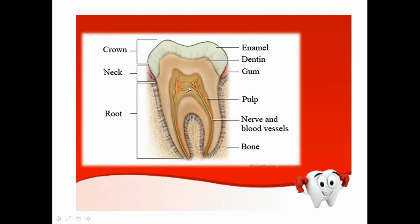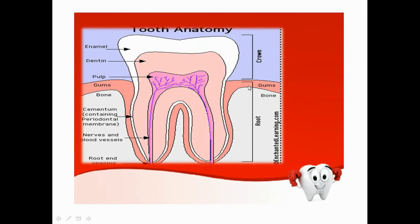And this is the pulp. The pulp contains nerves and blood vessels and is important to keep the tooth alive. This is the foramen apicale, where the nerve and blood vessels come into the pulp. We also have the alveolar bone, which is part of the maxilla or mandible, depending on what tooth we are talking about.